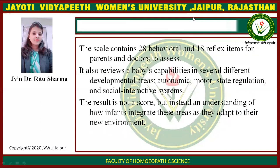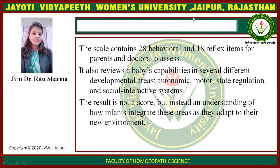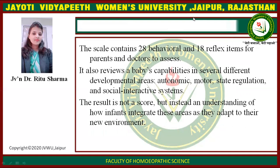The scale contains 28 behavioral items and 18 reflex items for parents and doctors to assess. It also provides an evaluation of the baby's capabilities in several different developmental areas: autonomic, motor, state regulation, and social-interactive systems. The result is not a score but instead an understanding of how infants integrate these areas as they adapt to their new environment.